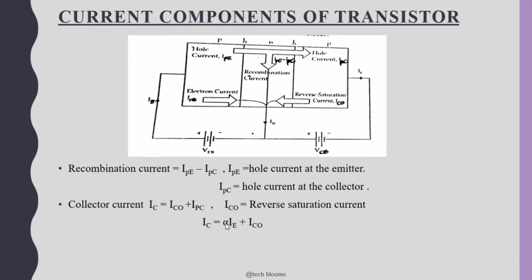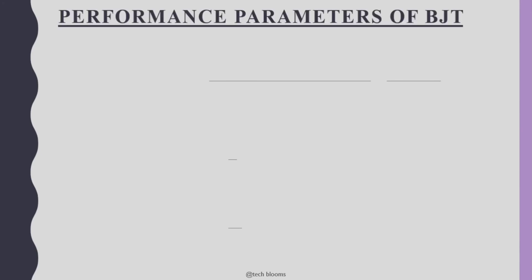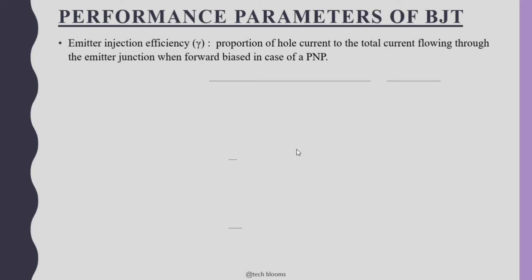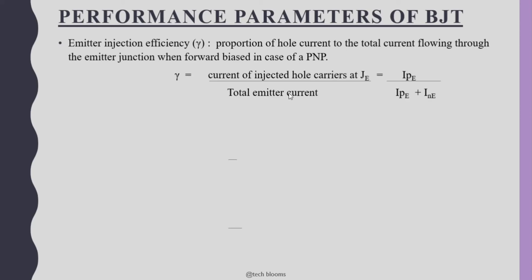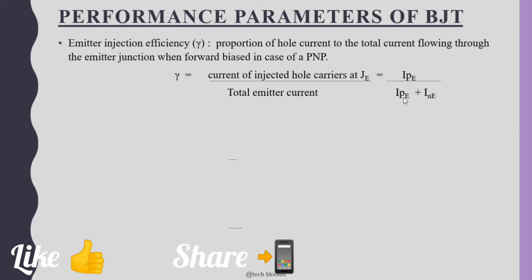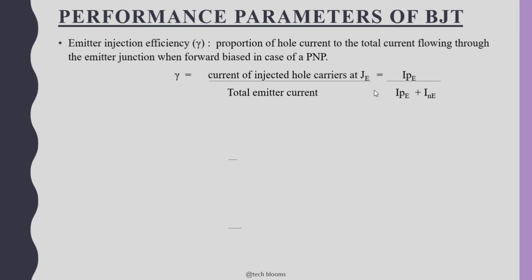Now we look at the performance parameters of the BJT. The first parameter is emitter injection efficiency, gamma (γ), which gives the proportion of the hole current to the total current flowing through the emitter junction when forward biased, in the case of PNP. The formula is: γ = IPE / (IPE + INE), where IPE is the hole current and INE is the electron current at the emitter. The value of γ approaches one when INE is very small compared to IPE, which is why the base is lightly doped.